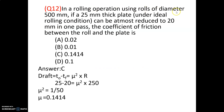In a rolling operation using rolls of diameter 500 mm, a 25 mm thick plate is reduced to 20 mm in one pass. Draft = T₀ − T_f = 25 − 20 = 5 mm. Using draft = μ² × R, with R = 250 mm: μ² = 5/250 = 1/50, so μ = 0.1414. Option C is correct.